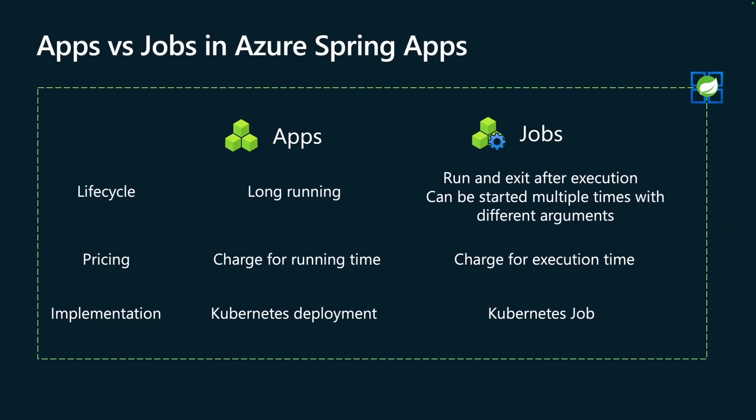Jobs is the new feature we are releasing in Azure Spring Apps that helps you run batch applications. To understand jobs, we will compare them with applications. Applications are already supported today in Azure Spring Apps Enterprise — they are long running. Azure Spring Apps Enterprise will run these applications as soon as they are deployed and ensure they continue to run. If an application terminates for any reason — an exception, an error, or even if it gracefully terminates — Azure Spring Apps Enterprise will restart the application. This is great for workloads like APIs, but may not be suitable for batch workloads.